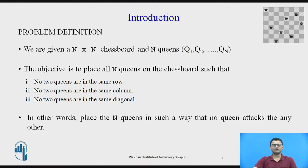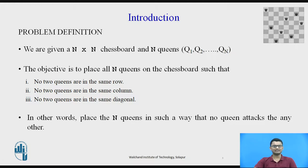If you are well versed with the game of chess, you know that a queen can traverse in any diagonal, any row, and any column from its current position. So our objective is that we have to place the N queens in such a way that no queen attacks any other queen. As you can see in this given picture, no queen is attacking any other queen.